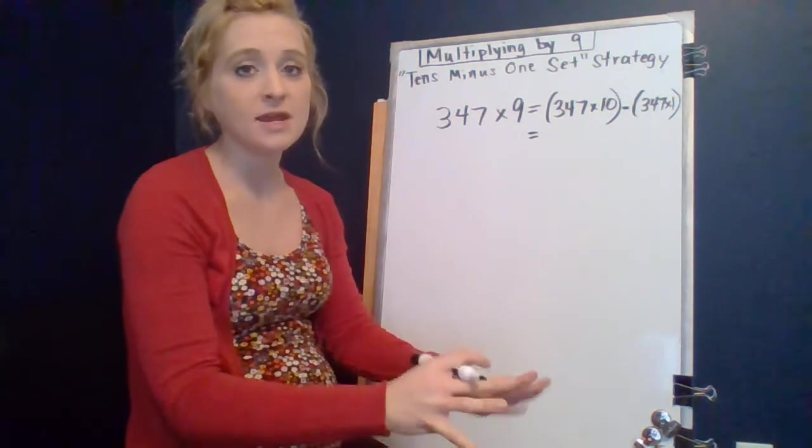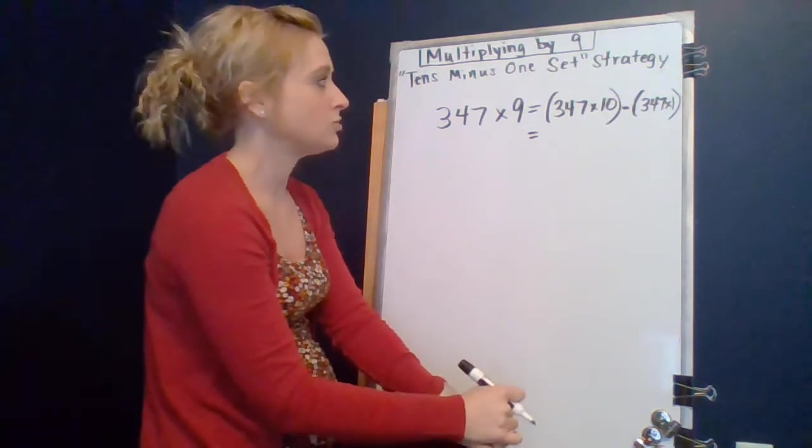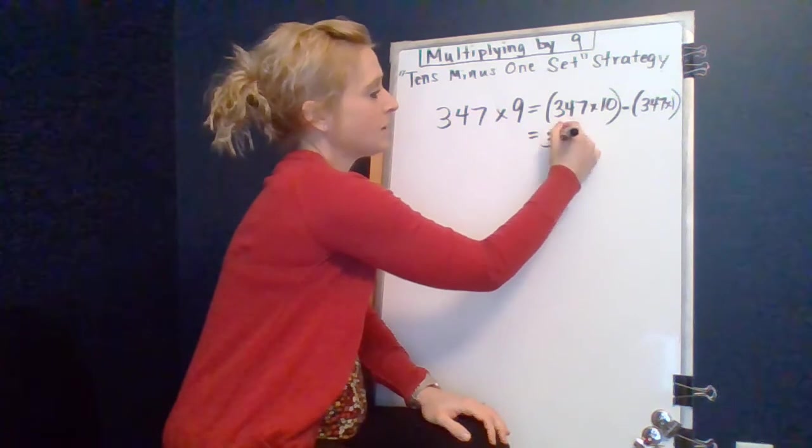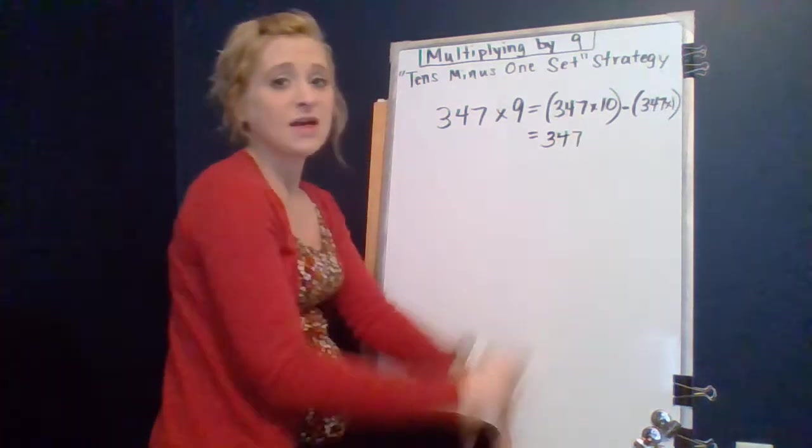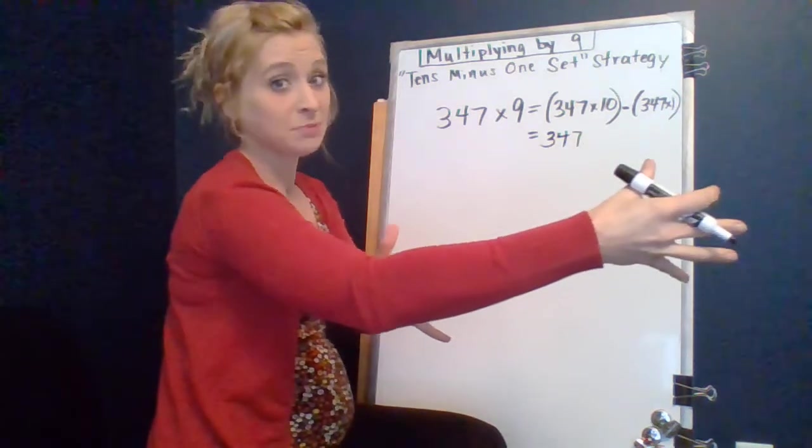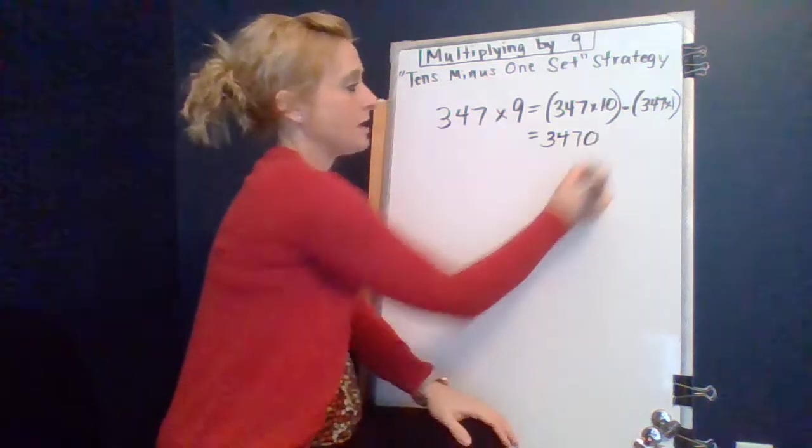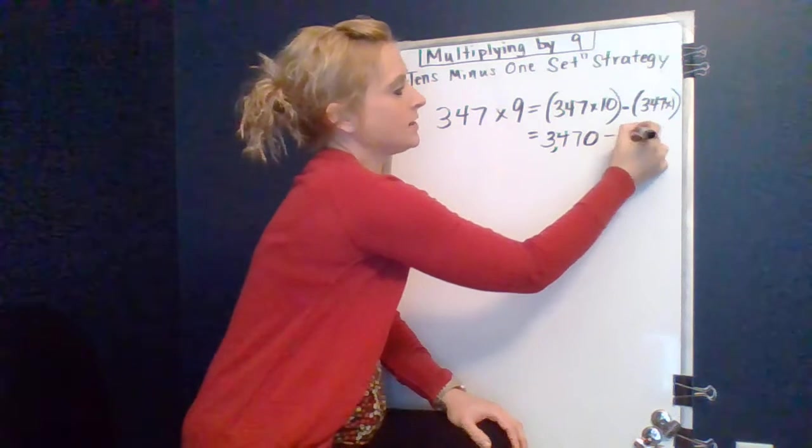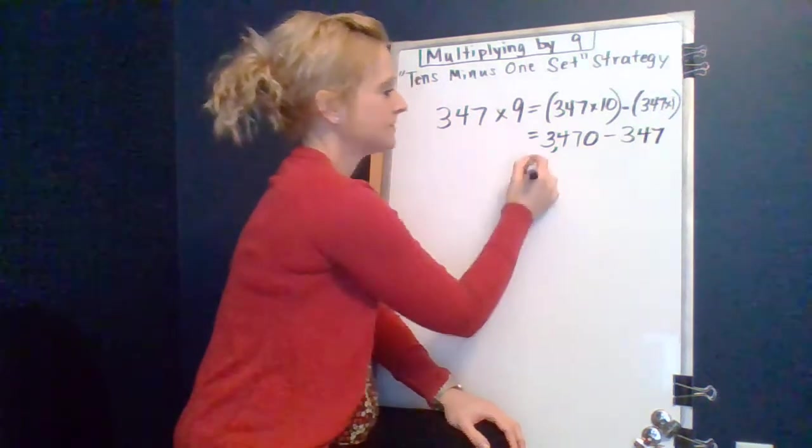So, 347 times ten, whenever you multiply any number by ten, all the digits shift one place to the left in the place value chart. So that three is going to be 3000, the four tens is going to become 400, the seven ones is going to become 70, and that zero that was in the tenths place is now going to cross over the decimal and move to the ones place.